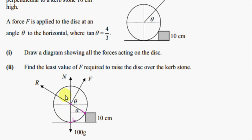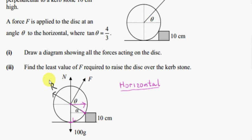That means the resultant force on it is zero. In particular, the sum of the horizontal components will be zero. Note that this diagram is not to scale. So we want the horizontal component of R — these two components have to balance, they have to be equal in magnitude. Let's call this angle alpha. So F cos theta must equal R cos alpha.